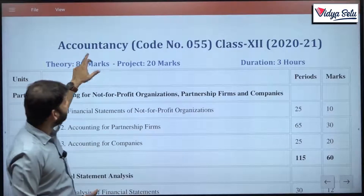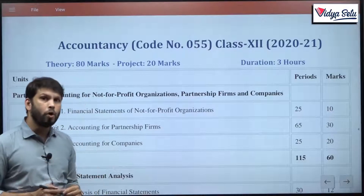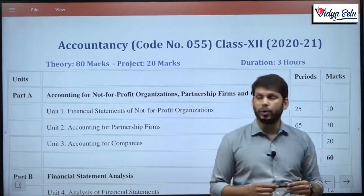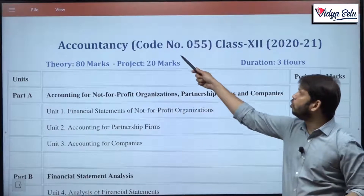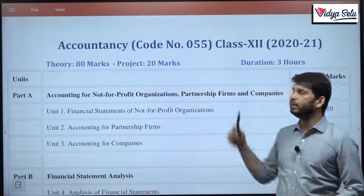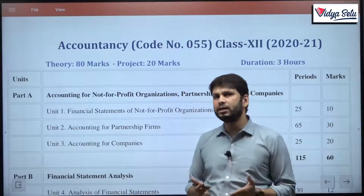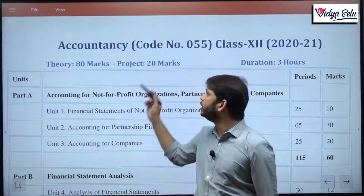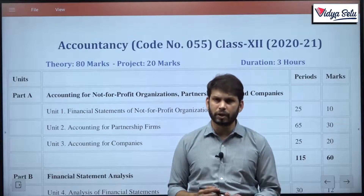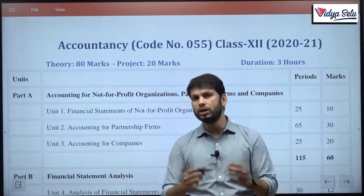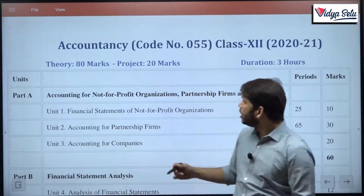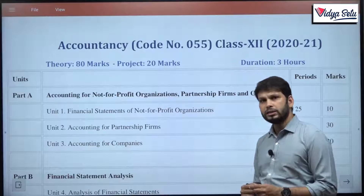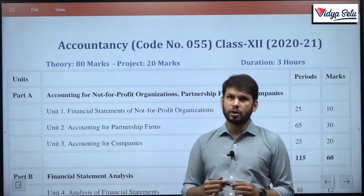The accountancy for 12th standard, which is our board class, for the year 2021, the CBSE code for this subject is code number 055. Where will we need this code? You will only need to fill this code when you are going to fill your exam form — your school teachers will help you with that. The total marks of accounts in board is 100 marks, but this 100 is divided.